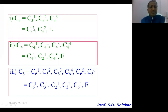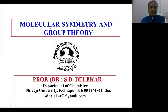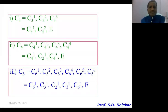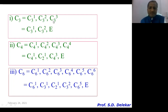Now let's simplify. For C3, the subelements are C3¹, C3², and C3³. C3¹ and C3² remain as they are. C3³, as per the identity rule, results in the original orientation of the molecule. This means if you operate the three-fold axis of symmetry three times on ammonia, PH3, or any AB3 molecule, you get back the original orientation. So C3³ is equal to E.